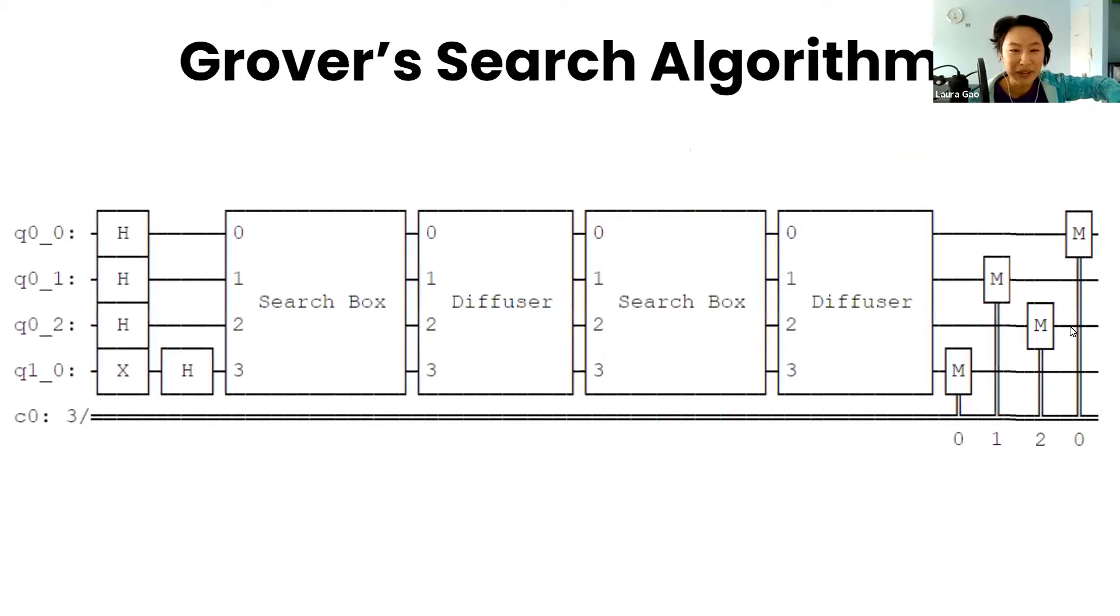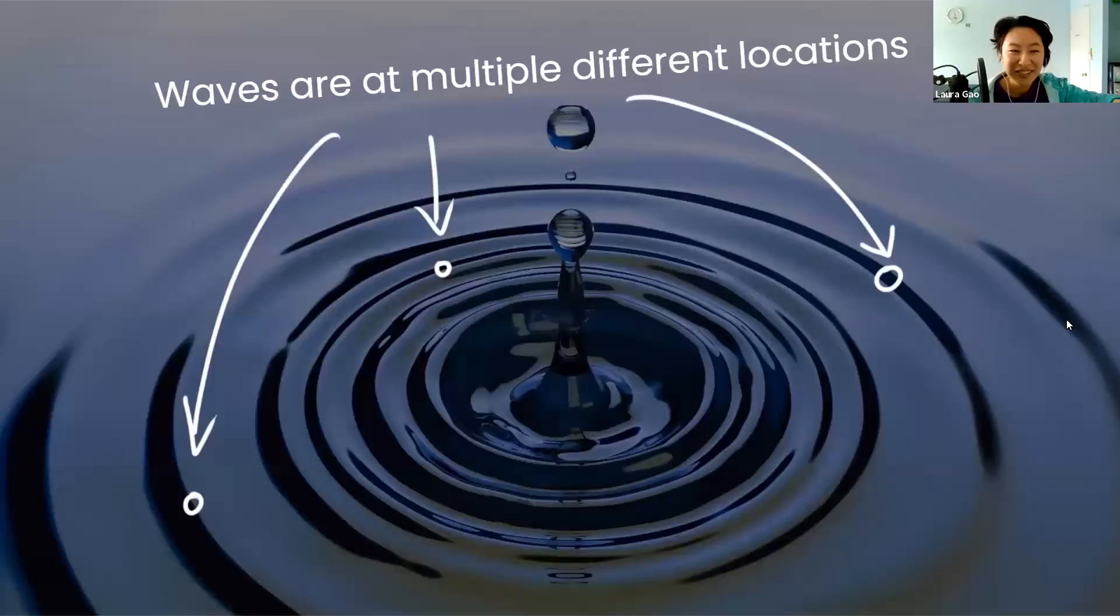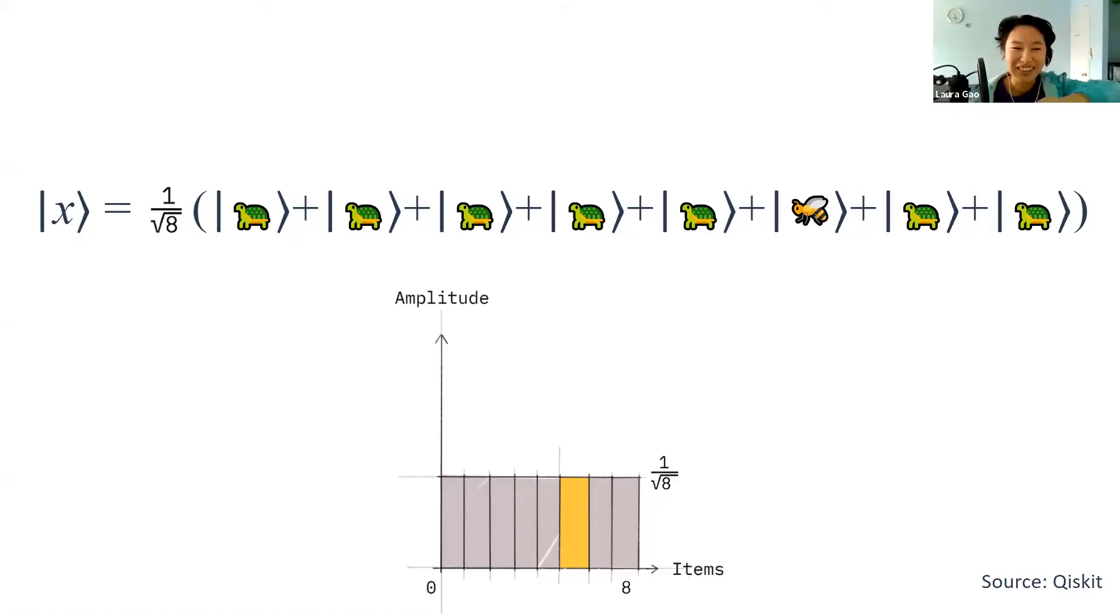I actually built a quantum circuit that does just that using waves. Waves are really cool because they can be at multiple locations at once. When you throw a rock into the ocean, you can see the ripples propagating through space through multiple locations at once. And quantum objects are waves.